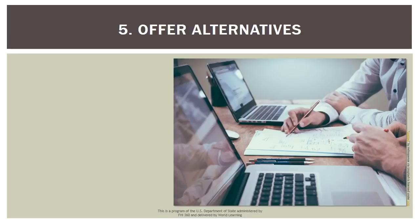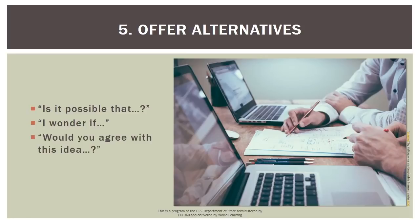Another way to understand someone is to offer alternatives to what they are saying. For example: "Is it possible that...," "I wonder if...," or "Would you agree with this idea?" You can use these phrases to check for understanding, take the other person's ideas further, or perhaps to take them in a new direction. When you take their ideas further, you show them implications, or meanings and outcomes, of what they are saying — implications they understand but did not say, or implications they have not thought about yet. When you suggest taking the other person's ideas in a new direction, you offer an interpretation that is different from theirs.